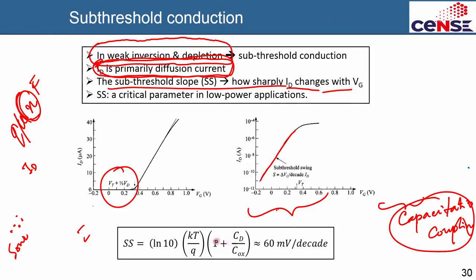The lowest value you can get — the best case, ignoring CD/Cox — is approximately 60 mV per decade. This means for one decade (one order of magnitude) change in current, you must change the gate voltage by 60 mV. For example, going from 10⁻¹¹ A to 10⁻¹⁰ A is one order of magnitude, and each such step costs 60 mV.